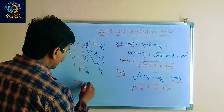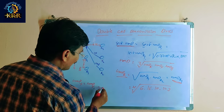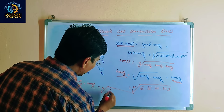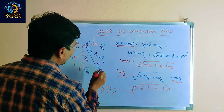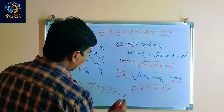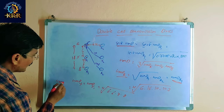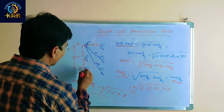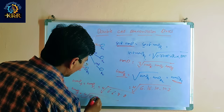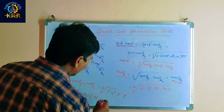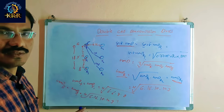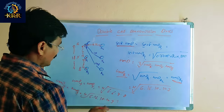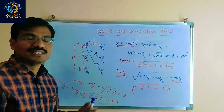Similarly, GMD at Y equals the 4th root involving Y1 distances: 6, 6, 8, 8. For GMD at B, using B1 distances: 6, 16 and the values 10 and 14.3. After substituting all these values for GMD at R, Y, and B, you will get the final GMD value.